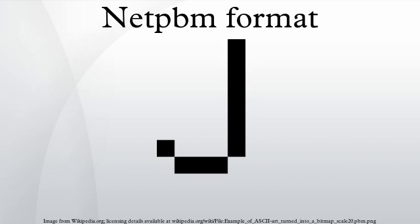The string P1 identifies the file format. The hash sign introduces a comment. The next two numbers give the width and the height, then follows the matrix with the pixel values. Here is the resulting image; here it is again magnified 20 times. Note that a 0 signifies a white pixel and a 1 signifies a black pixel.